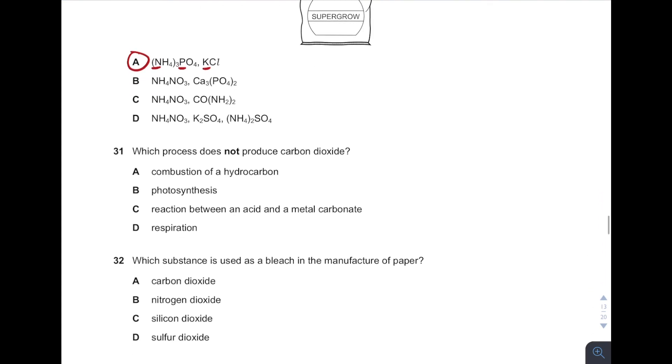31. Which process does not produce carbon dioxide? Okay, pretty easy. Answer is B, photosynthesis. It uses carbon dioxide to produce oxygen.